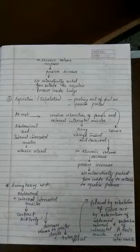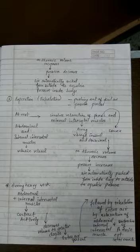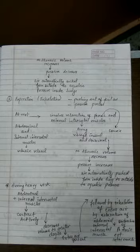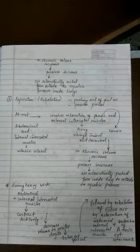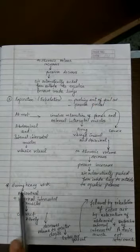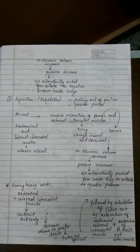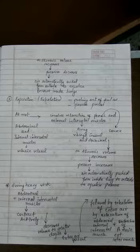During heavy workload, not just the phrenic muscle and external intercostal muscle, but abdominal muscles as well as internal intercostal muscles play a crucial role in the process of expiration. First of all, these muscles—abdominal muscle and internal intercostal muscle—undergo contraction.